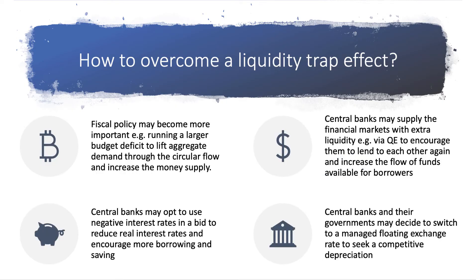So what can we do to perhaps overcome a liquidity trap? Here are four key points. The key is to understand that in a liquidity trap, monetary policy working through very low interest rates can become less effective in stimulating aggregate demand, output, and incomes. From a Keynesian perspective, if monetary policy is becoming less effective, then fiscal policy — changes in government spending, changes in taxation, changes in the budget deficit — may become more important and more significant.